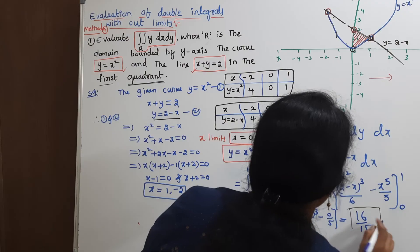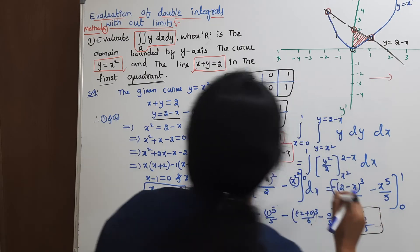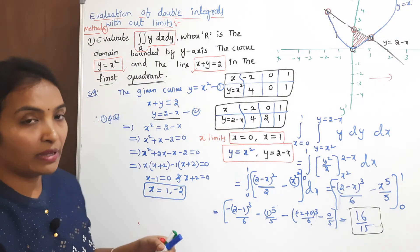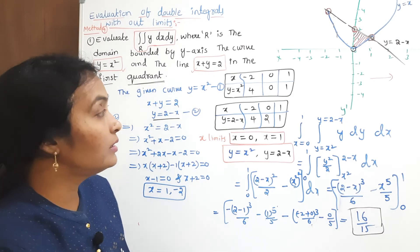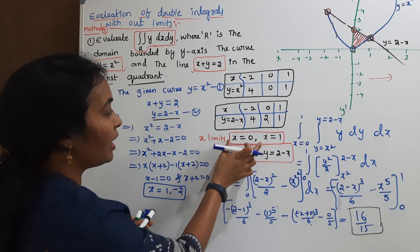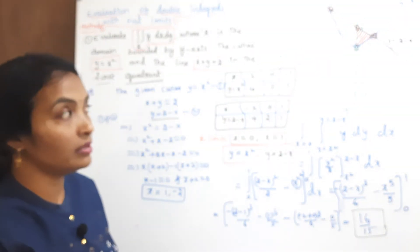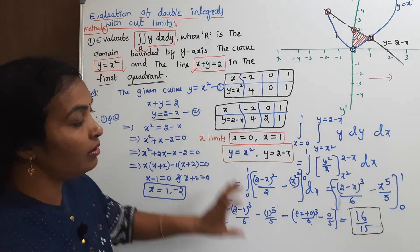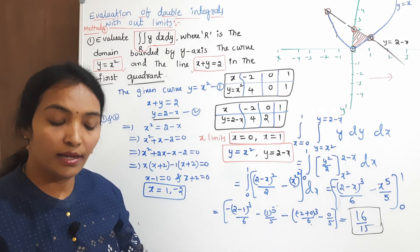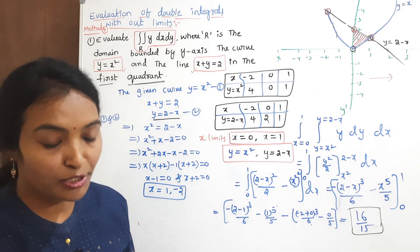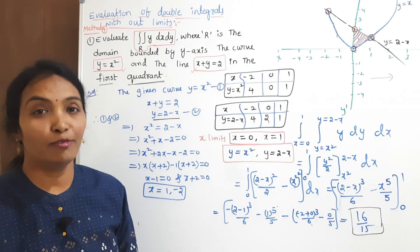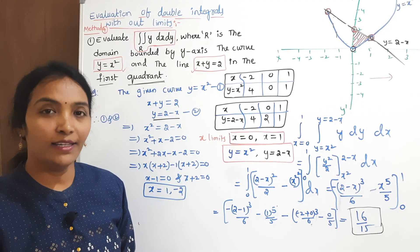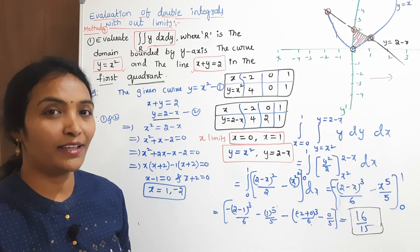By using the given data, first we split the limits, draw the curve, find the upper and lower region limits, and put those limits into the given double integral to get the answer. Please like, share, subscribe, and comment. Thanks for watching.